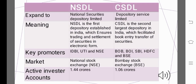Differences between NSDL and CSDL: In terms of full form, NSDL stands for National Securities Depository Limited, while CSDL stands for Central Depository Services Limited. In terms of meaning, NSDL is the first depository established in India, which ensures trading and settlement of securities in electronic form. CSDL is the second largest depository in India, which facilitates book-entry transfer of securities.